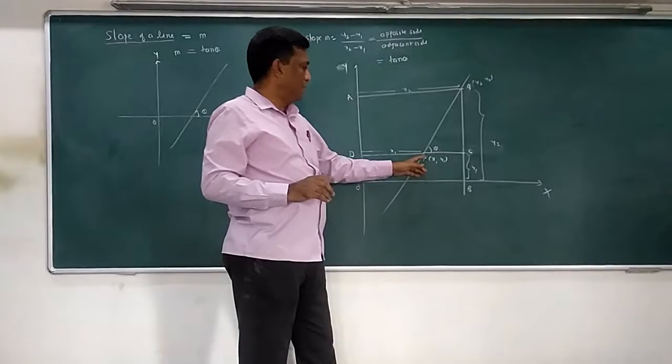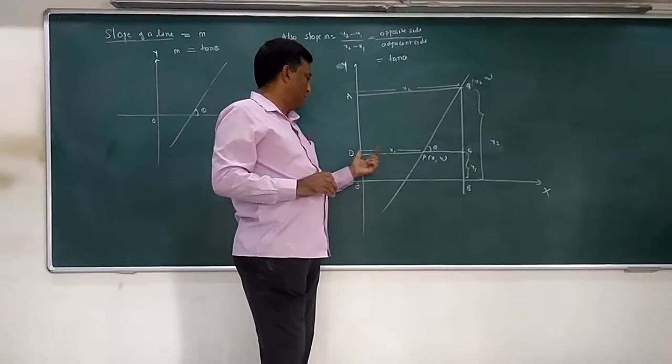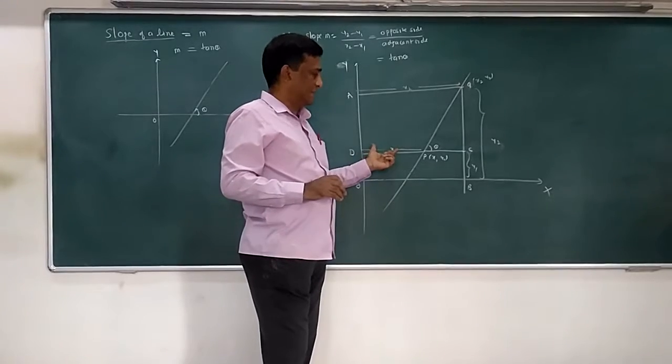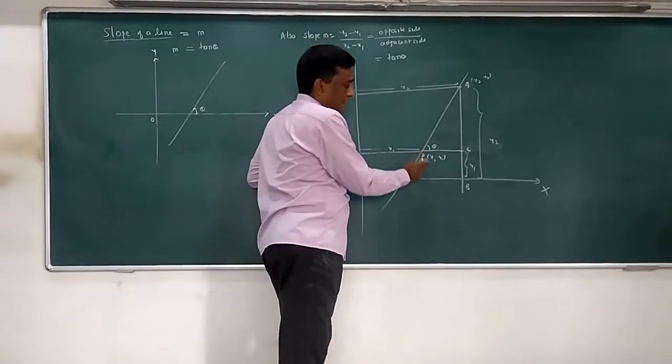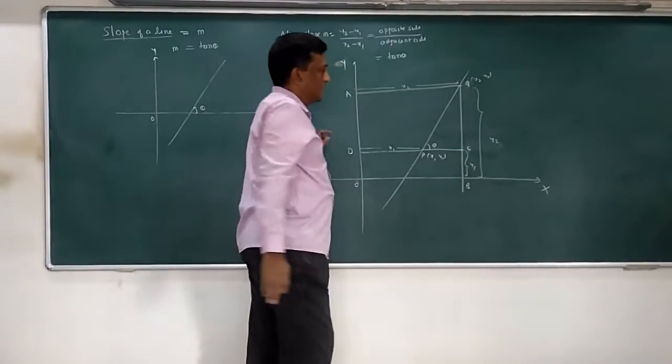Now if you talk about point P, its coordinates are x1, y1. So distance of P from y-axis, that is length PD is x1, and distance of P from x-axis is nothing but y1.